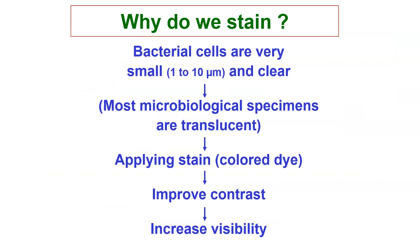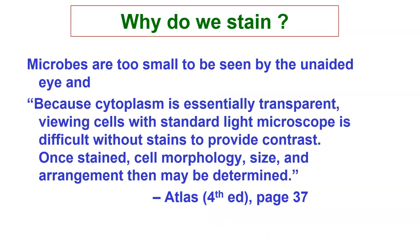Why do we stain bacteria? Bacteria cells are very small, 1 to 10 microns. They are clear or transparent, as are most microbiological specimens. So we apply stain, which is really a colored dye, to improve contrast and increase visibility. That's why we apply stains.